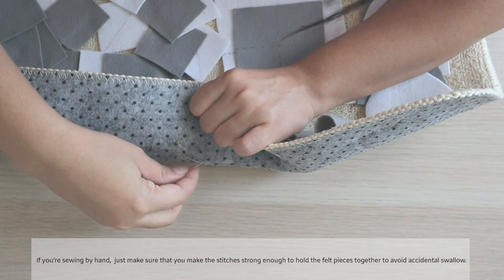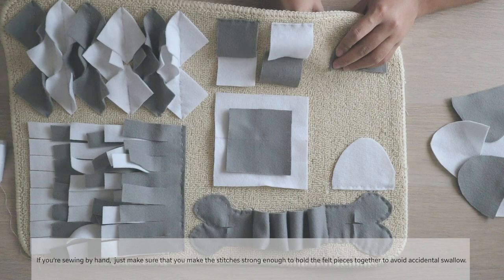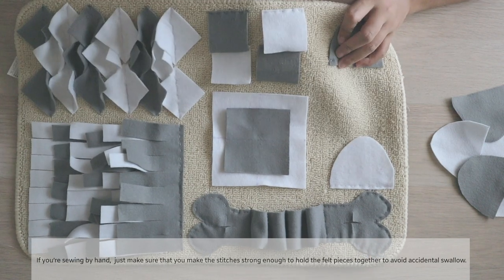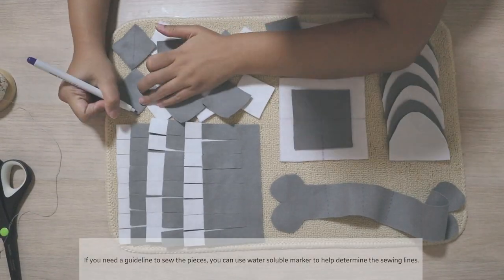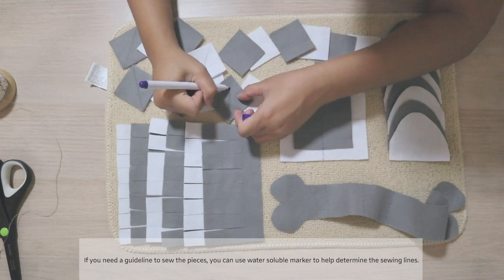If you are sewing by hand, just make sure that you make the stitches strong enough to hold the felt pieces together to avoid accidental swallowing. If you need a guideline to sew the pieces, you can use a water-soluble marker to help determine the sewing line.